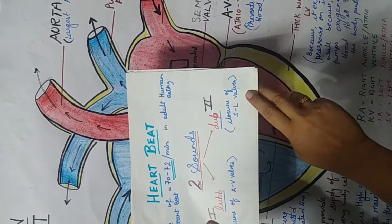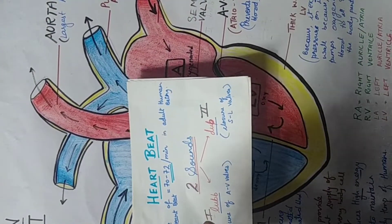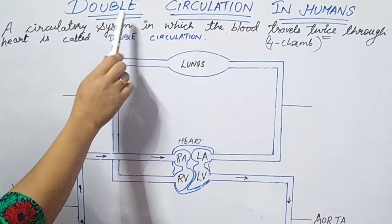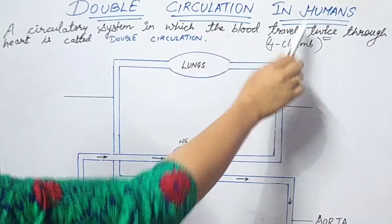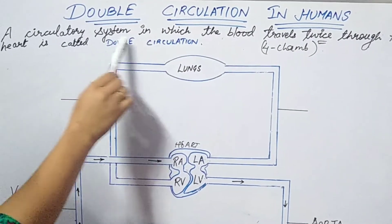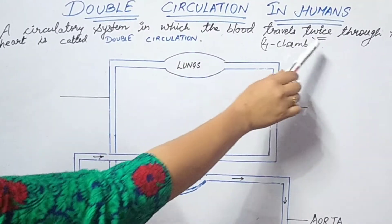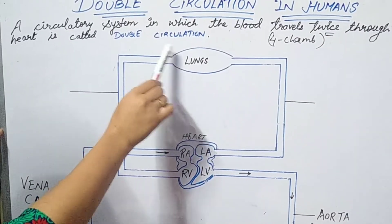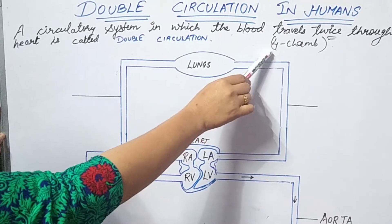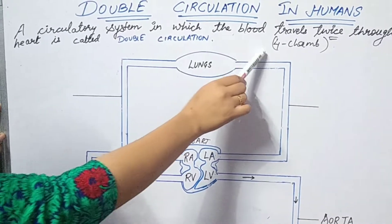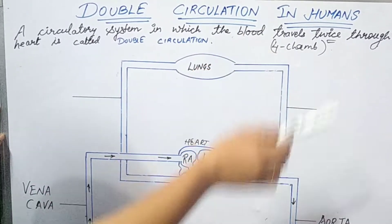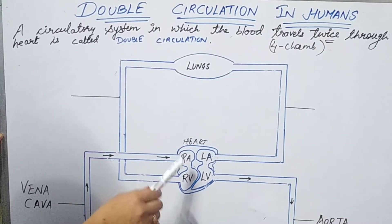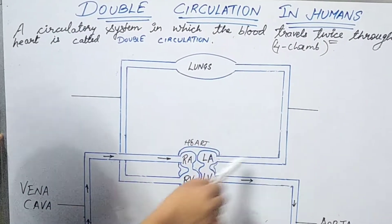This is all about the heartbeat. Next, we will study the double circulatory system. In human beings, a circulatory system in which blood travels twice through the heart is called the double circulatory system. Since we have a four-chambered heart, blood travels from the heart to the body organs, back to the heart, then to the lungs, and back to the heart again.